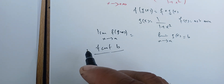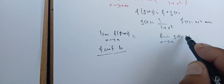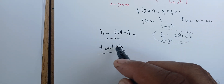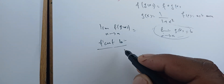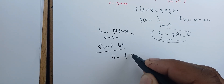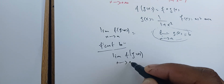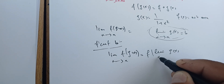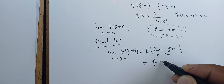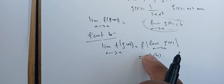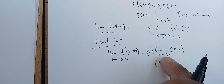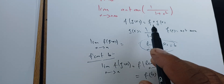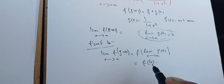If this limit exists and f is continuous at that limit, then we can say the limit of f of g of x as x goes to a equals f of the limit of g of x as x goes to a, which gives us simply f of b. Because f is continuous, we just evaluate — we take the image. In our case, g is 1 over 1 plus x squared.